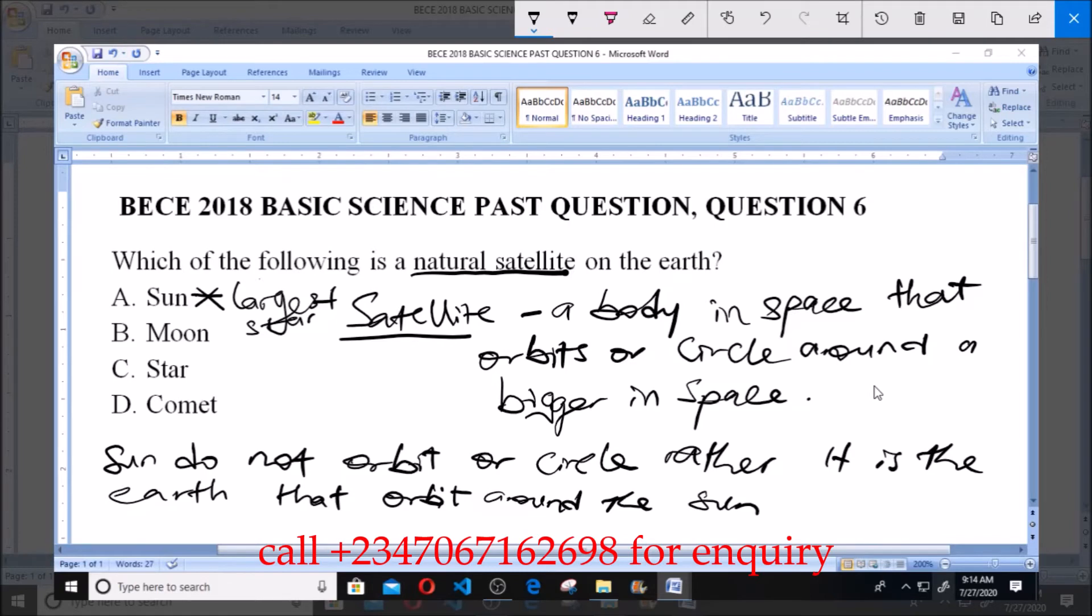Then C here is a star. Now like we know, stars are heavenly bodies. And these stars, they do not orbit. So the star cannot be the natural satellite of the earth.